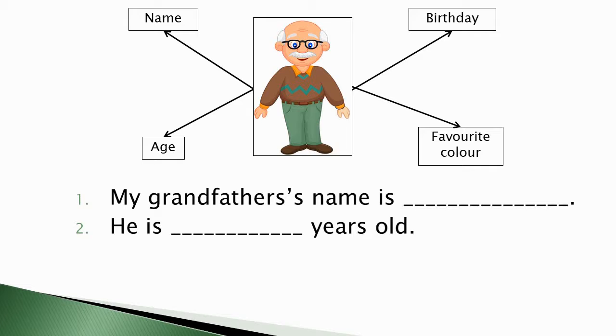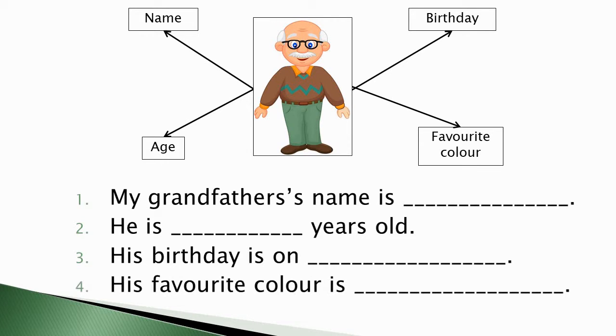The third idea is birthday. So the sentence is, his birthday is on blank. And the last idea is favorite color. So the sentence is, his favorite color is blank.